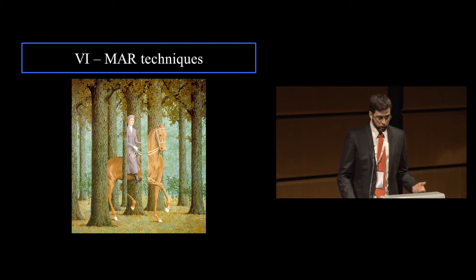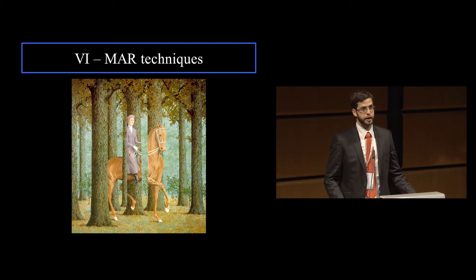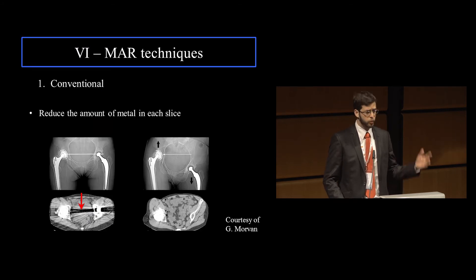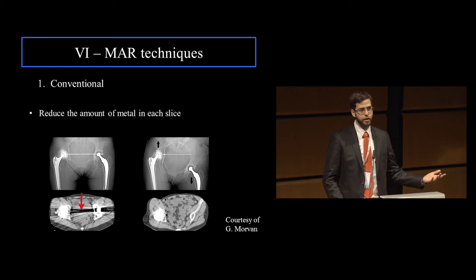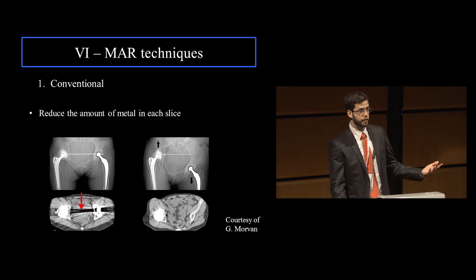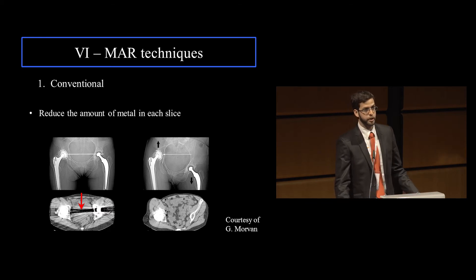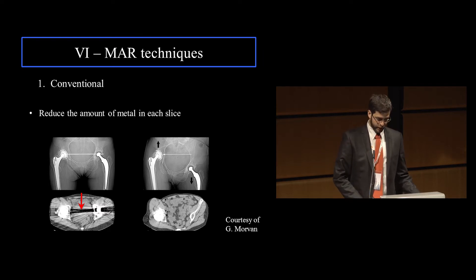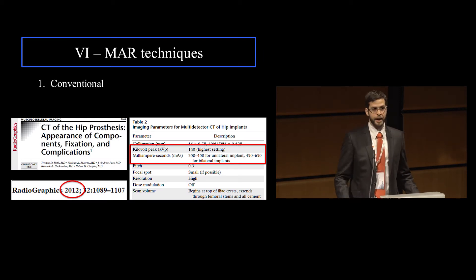If we talk about metal artifact reduction on CT, there are a lot of techniques that have been going on for quite some time. Basically, the first thing to do is try to get the metal out of the imaging field. If you reduce the amount of metal in each slice, you have fewer metallic artifacts. We just moved the patient and took some of the metal out of the evaluation field, and the metal artifacts are reduced. But this technique is very limited in application because it's hard and you cannot apply it to every patient.